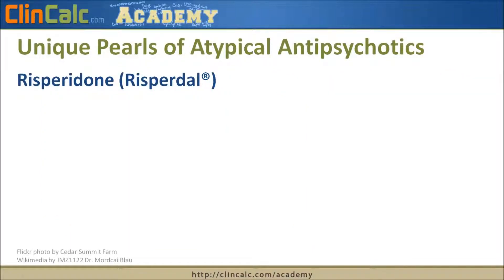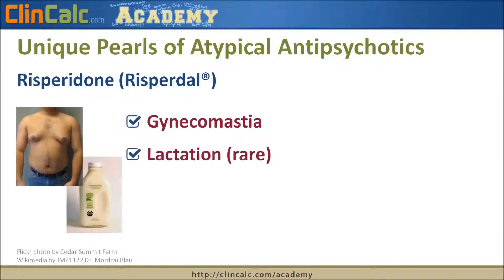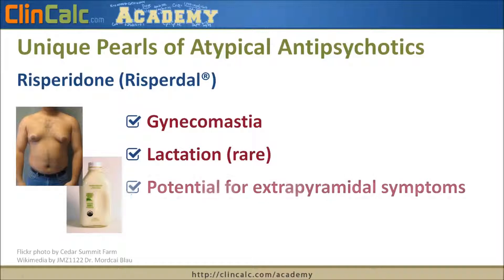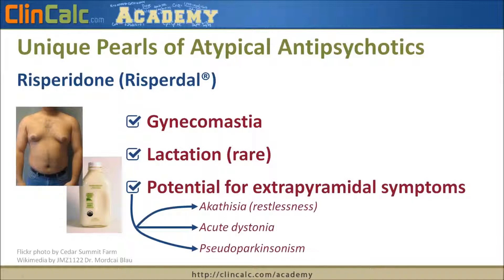With risperidone or Risperdal, the unique clinical pearl in terms of adverse effects is hyperprolactinemia — an elevated level of prolactin in the blood. This typically manifests as gynecomastia, or breast tenderness and pain, including female-pattern breast development in men. Very rarely it can result in galactorrhea, or production of milk, mostly in women. Additionally, risperidone can cause extrapyramidal symptoms — akathisia, dystonia, and pseudo-parkinsonism.